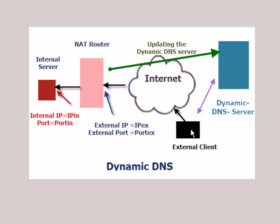What you do with a dynamic DNS server is: when the external IP address changes, it updates the records on the dynamic DNS server. When you want to access the machine, you first go to the DNS server, get the current IP address from it, and then access the machine. These dynamic DNS servers are provided by external companies — service providers — so you'll need to sign up with a service provider to use dynamic DNS.